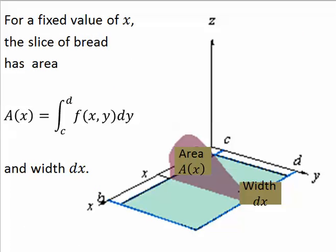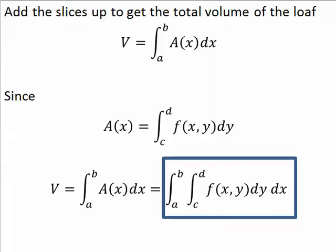For a fixed value of x, the slice of bread has area A(x) and width dx. Add the slices up to get the total volume of the loaf, which is this double integral.